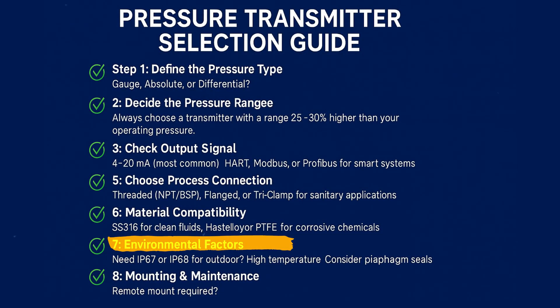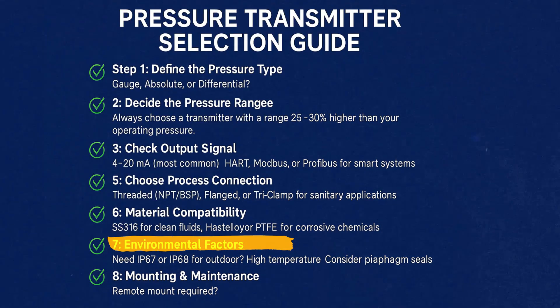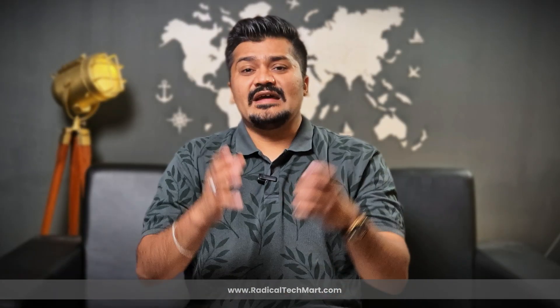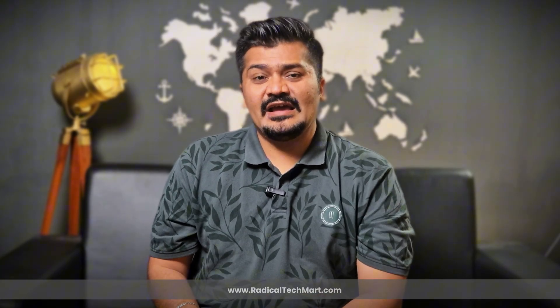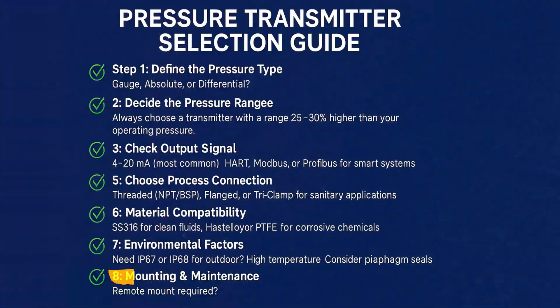Step 7: Consider environmental factors. You need IP67 or IP68 ratings for outdoor use. For high temperatures, consider diaphragm seals. For explosion-prone zones, get ATEX or IEC explosion-proof certified models.